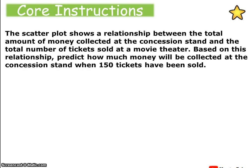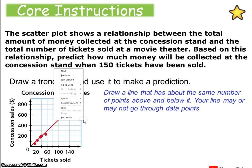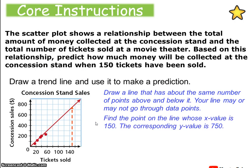In this scenario, the scatter plot shows a relationship between the total amount of money collected at the concession stand and the total number of tickets sold at a movie theater. We're going to predict how much money will be collected when 150 tickets have been sold. We draw a trend line through the data, with half the points above and half below. Going to 150 on the x-axis and up to the line, the y value is 750.